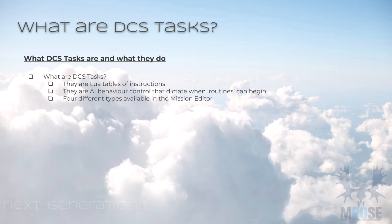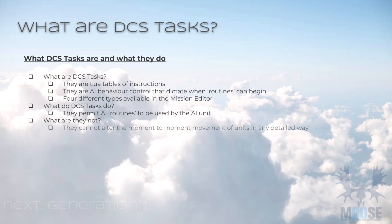There are four different types of DCS tasks and these are primarily available in the Mission Editor. What do DCS tasks do? They permit the AI to perform their routines — for example, an AI routine may be to engage or attack a target. What they can't do is alter the moment-to-moment movement of units in any detailed way. This means they cannot change whether an aircraft moves left or right, how it intercepts or what it does. It only enables the Eagle Dynamics Simulator AI to start its routines.